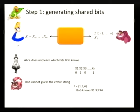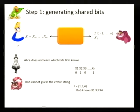Imagine that the n-bit string which is generated is say 0, 1, 0 and so on, and Bob knows some bits about it. For example, he knows the bit at index i, so he knows bit one, bit three and bit four as an example.